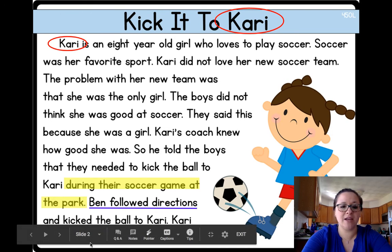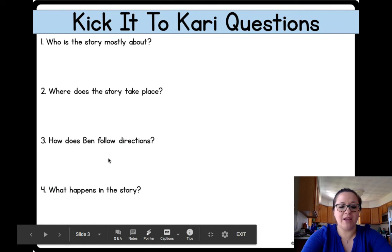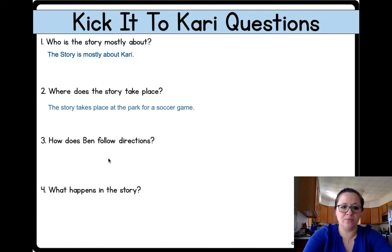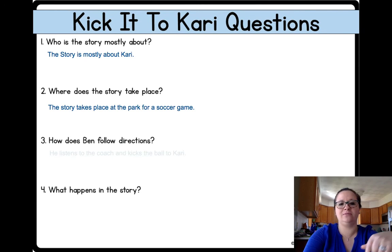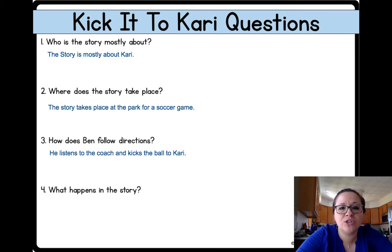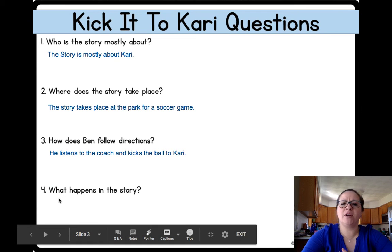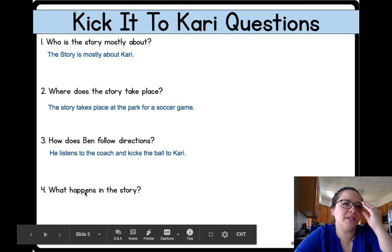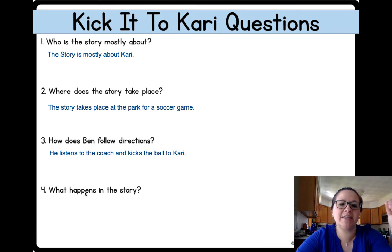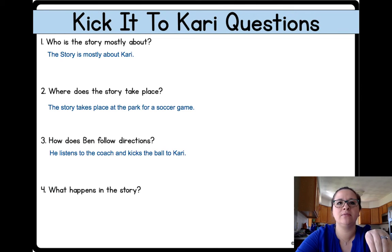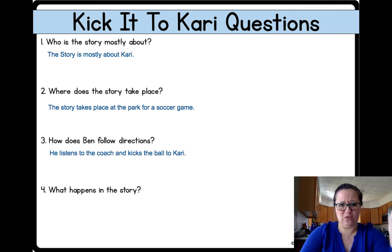So I'm going to go to the next slide and answer that question. How did Ben follow directions? He followed directions by kicking the ball to Kari. He listened to the coach and kicked the ball to Kari — complete sentence. Now this one we're going to add a little bit more than we did yesterday, because it doesn't say what happens at the end of the story — it says what happens in the story. So basically we want to just kind of summarize it with the few main details.